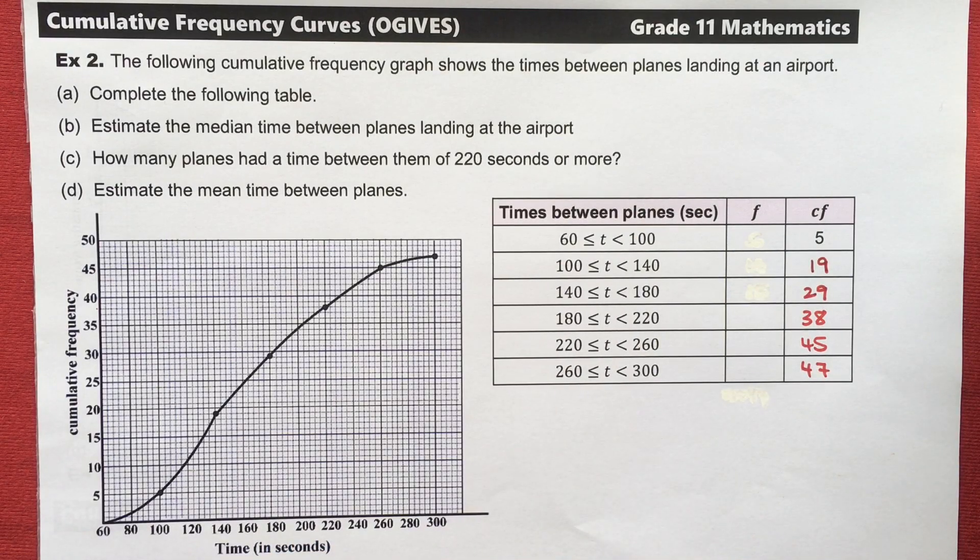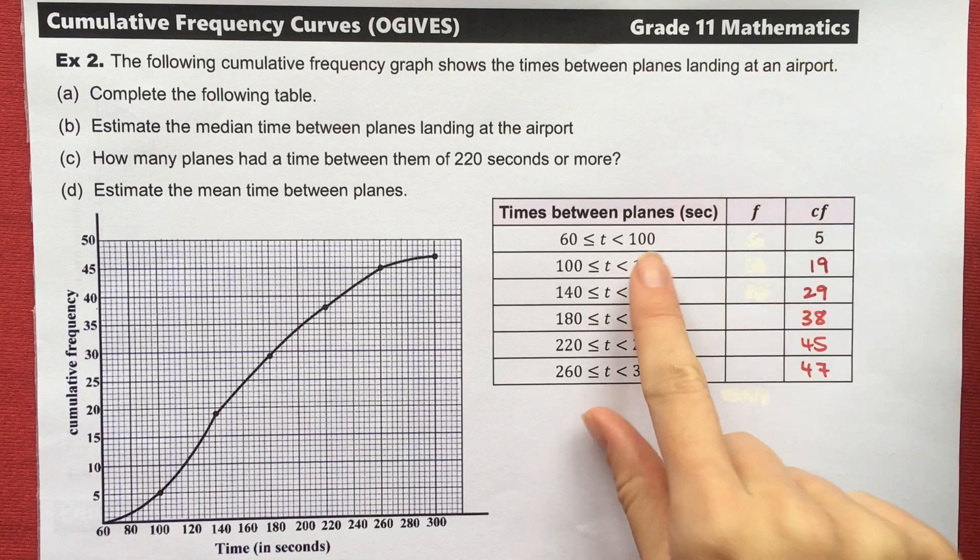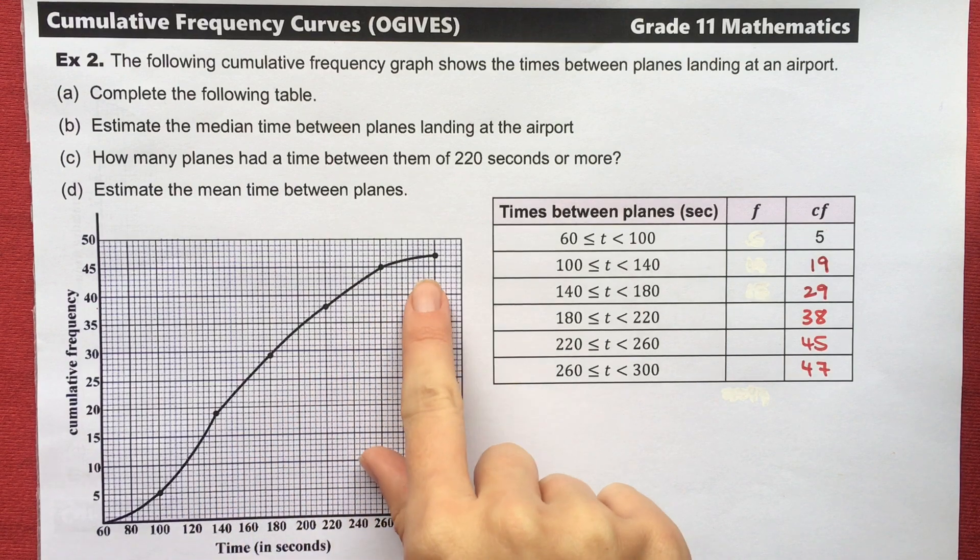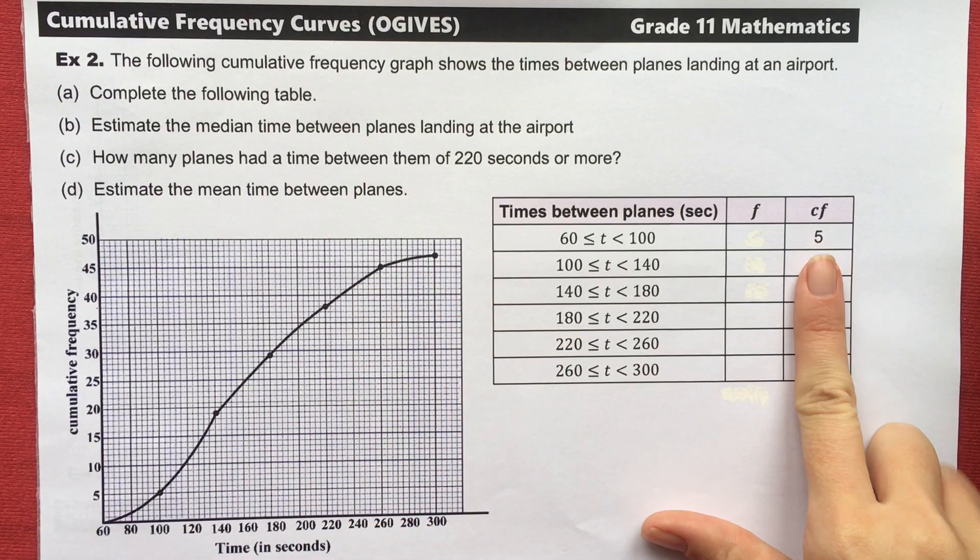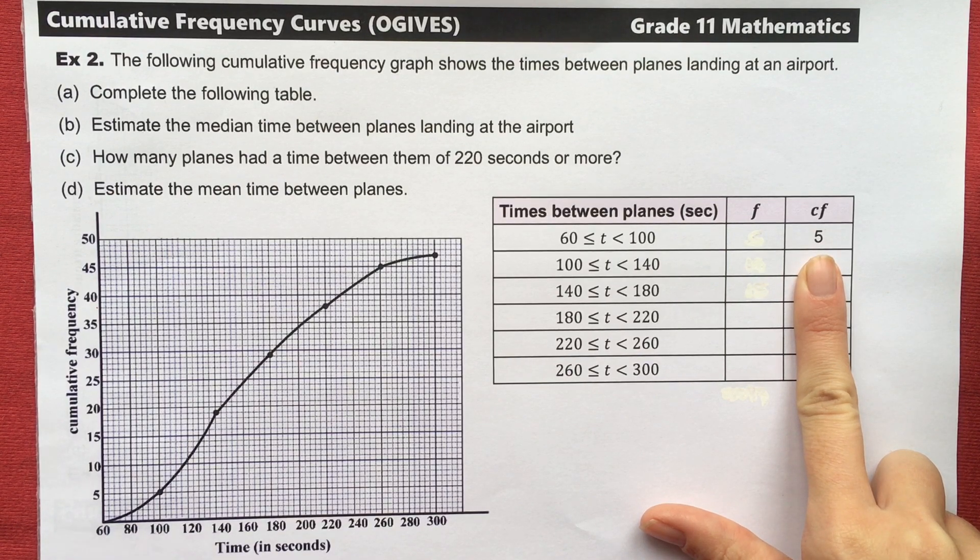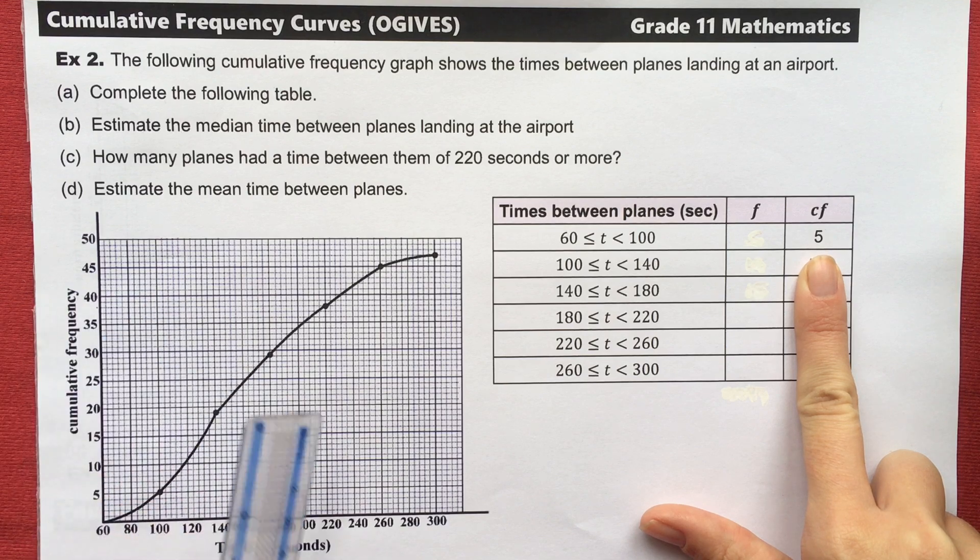Our next example is a little bit more challenging. And it speaks to one of my biggest fears, which I don't know if you've ever been on an airplane and you wonder how close behind me is the next plane. Are we going to collide on the runway or something like that? Maybe that's just me. But anyway, in this example, it shows the times between different planes landing at an airport and our table's in terms of seconds. So they give us the ogive this time, and we need to complete the table. So I've already done a little bit for you. We weren't supposed to see that. Let's see how we fill in this table.